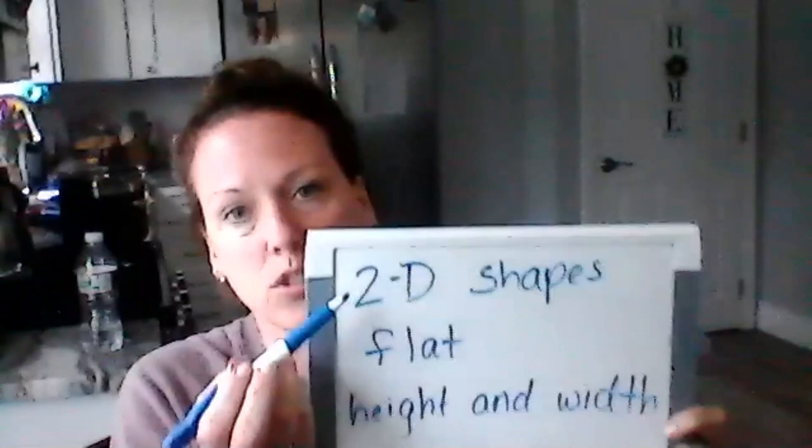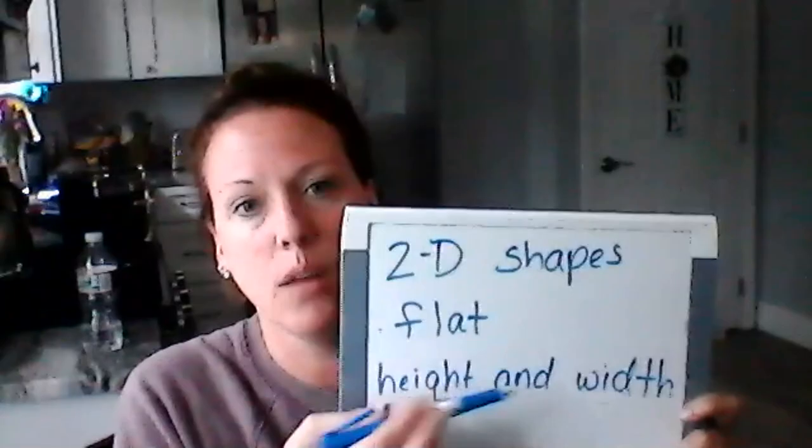I wanted to talk a little bit before we started our first shape about what two-dimensional shapes are. Two-dimensional shapes have height and width. Height is how tall something is and width is how wide. Those are the two dimensions.